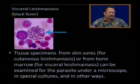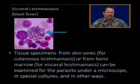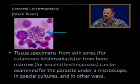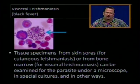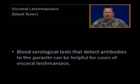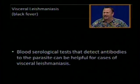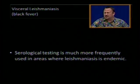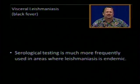Pictured here is a bone marrow biopsy with a monocytic phagocytic cell infected with amastigotes. Tissue specimens can be taken from skin sores in cutaneous leishmaniasis or from bone marrow biopsies in visceral leishmaniasis, and examined for parasites under a microscope or with special cultures. Blood serological testing can detect antibodies to the parasite, which is especially helpful in cases of visceral leishmaniasis.